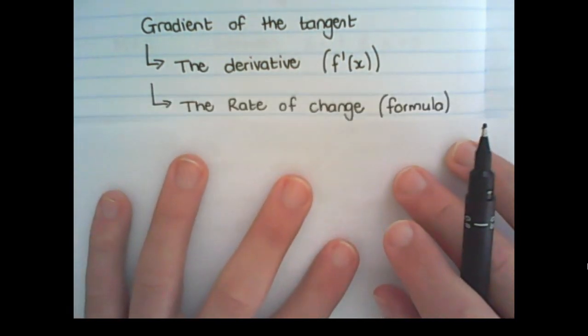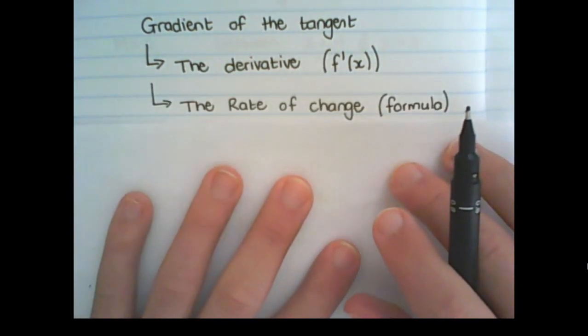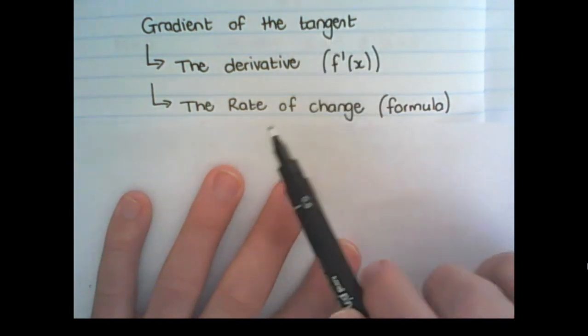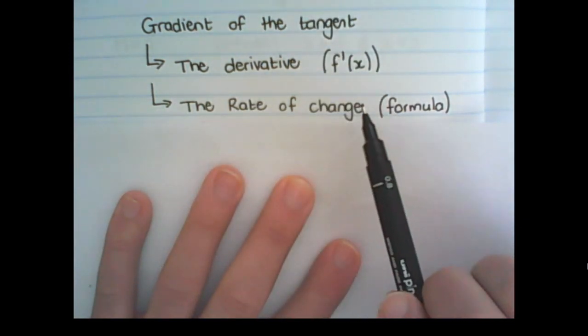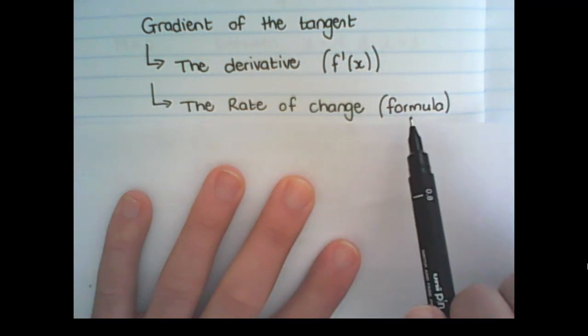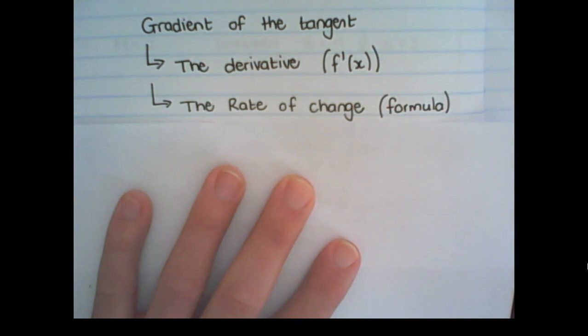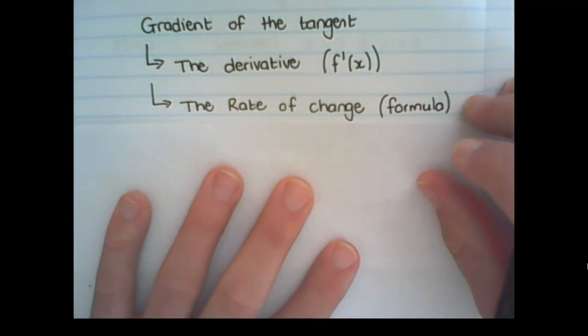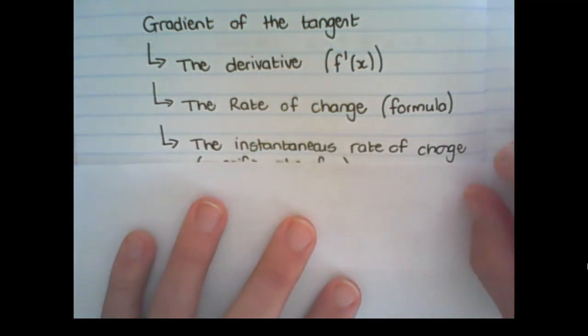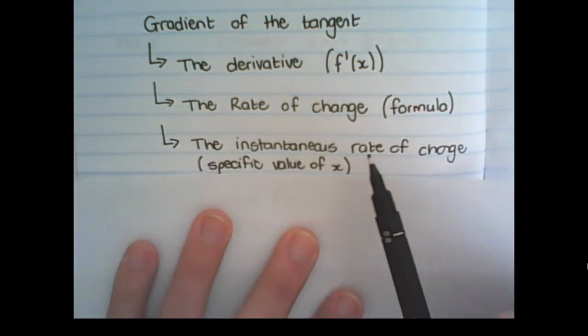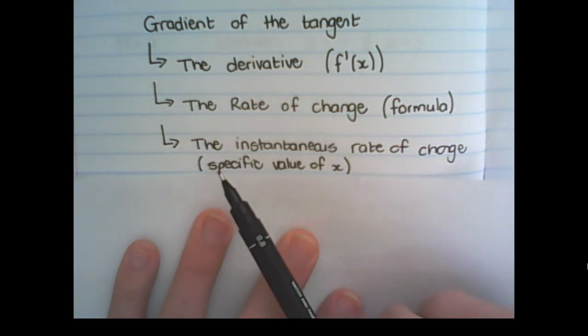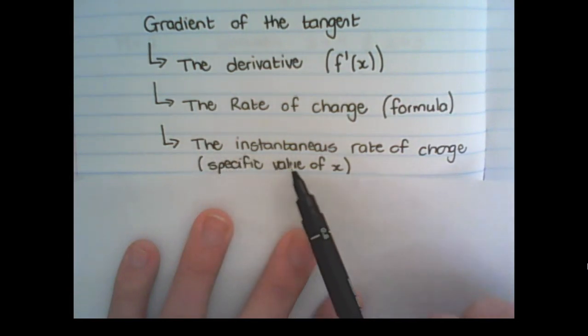Also what a gradient is, is a rate of change. And this is the gradient of a tangent at any point of x. So it's a formula at any point. So you can substitute an x value in. And that is called the rate of change. The gradient is also called the instantaneous rate of change. So that is when I want to find a derivative at a specific value of x.